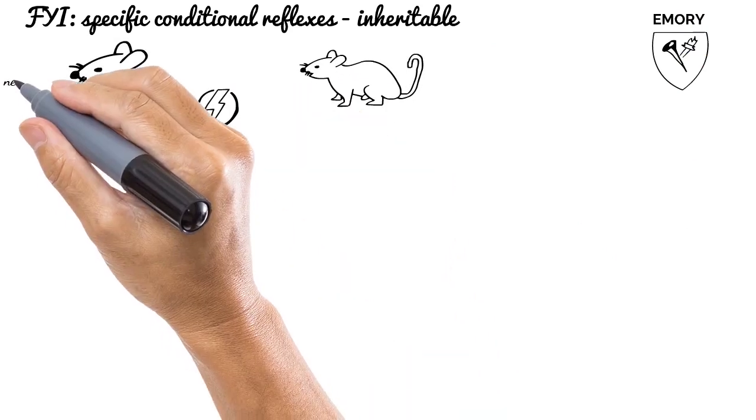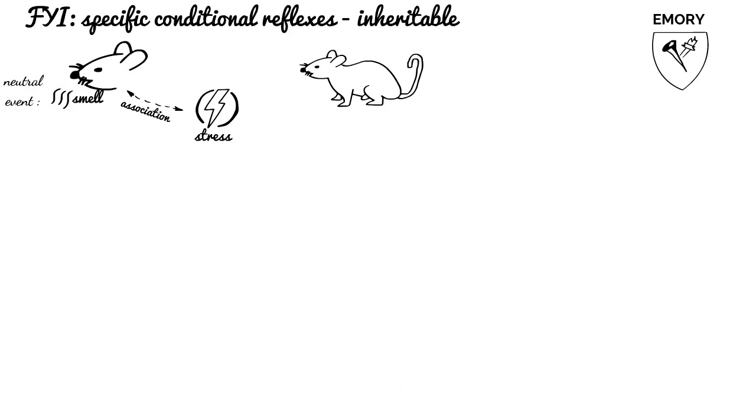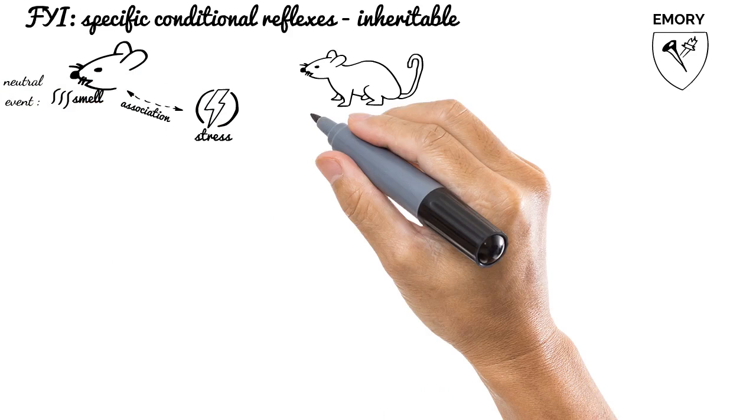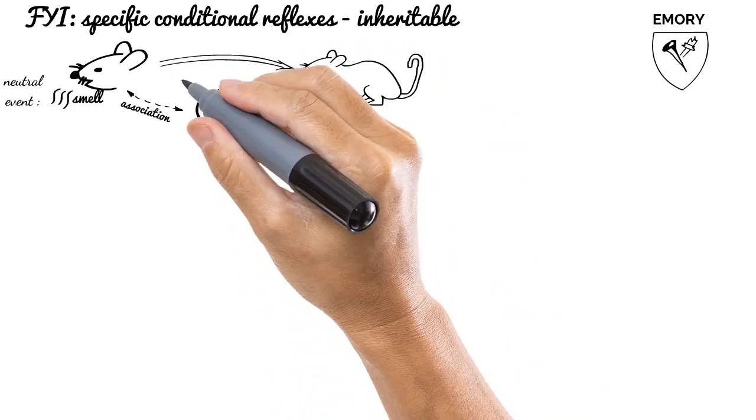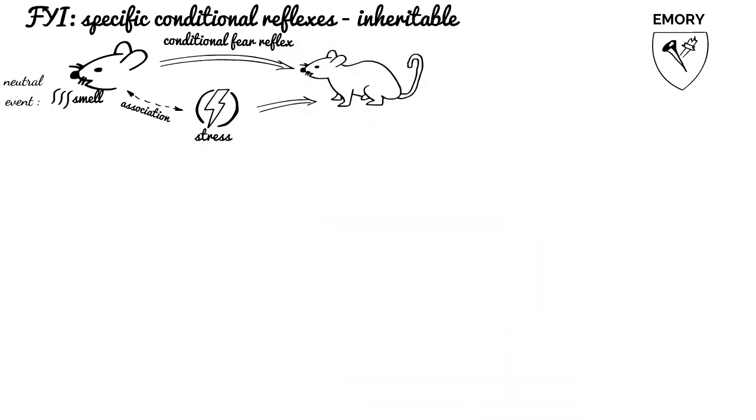Specific smell was initially neutral event for them. An associated stressful experience example was non-pleasant electrical impulse provided to mice feet. Eventually, conditional reflex was built up, so such mice developed a fear reflex for certain odor.